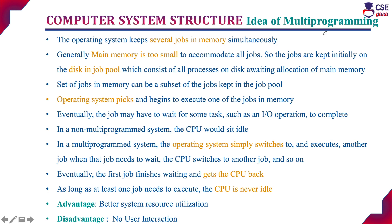The idea of multi-programming is that the operating system keeps several jobs in memory simultaneously. Generally, the main memory is too small to accommodate all the jobs. Whenever we want to assign any job to the CPU, it should be in memory. So we keep all the jobs initially on disk in a job pool. All the jobs in the job pool are ready to be assigned to the CPU whenever the CPU is free. The operating system picks and executes one job from the job pool and assigns it to the CPU for execution.